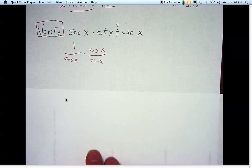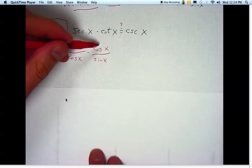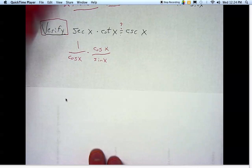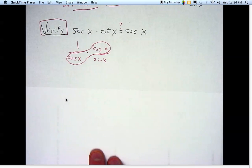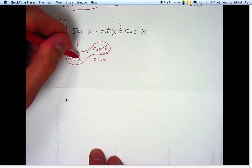And the algebra for this one is to cancel out things that are on the top and bottom. It's just like reducing a fraction. Basically, cosine of x over cosine of x is a giant one, and so I can cross both of those off.